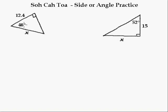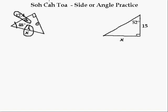So how do we start these things? You're going to label from the 48 degrees, so from this angle, that is the opposite, which makes this the hypotenuse. Well, it's hypotenuse anyways, but this is the adjacent side. So I'm looking for A and H. I hope you can still read that — that was 12.4. So A and H. Go up here, find A and H. It is cos.